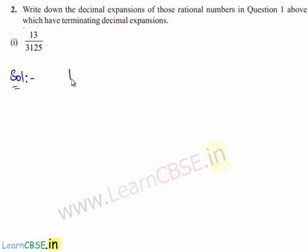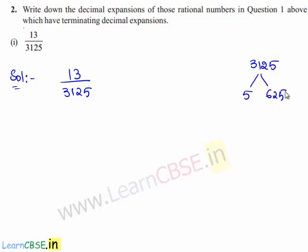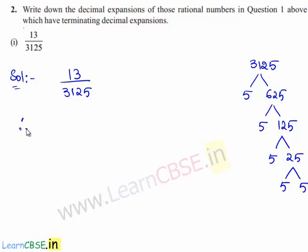To find the decimal expansion of 13 upon 3125, we shall first write the denominator, that is 3125, as a product of its prime factors. Therefore 3125 can be written as 5 times 625, and 625 can be written as 5 times 125. 125 can be written as 5 times 5 times 5. Therefore 3125 can be written as 5 multiplied with itself 5 times.